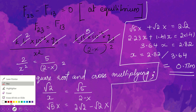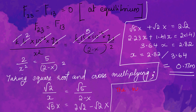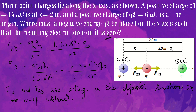So the negative charge q3 must be placed at a distance of 0.77 meters from charge q2. This is the correct answer. If you have any questions or doubts, please put them in the comment section and I will answer them. Thank you for listening.